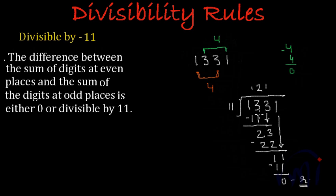This is the proof of the rule: if the difference of the sum of the digits at even places and the sum of the digits at odd places is either 0 or a multiple of 11, the number itself will be divisible by 11.